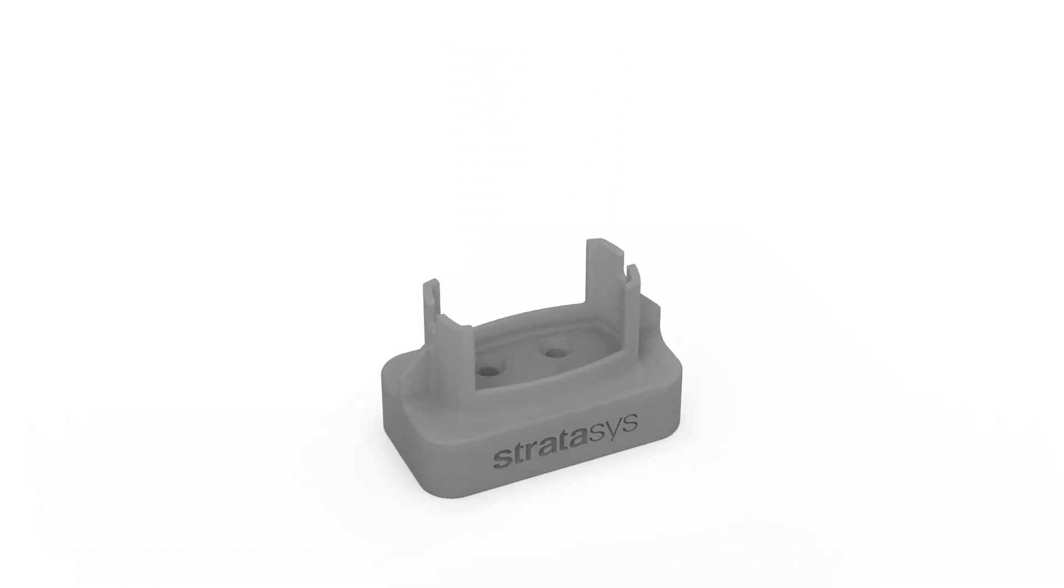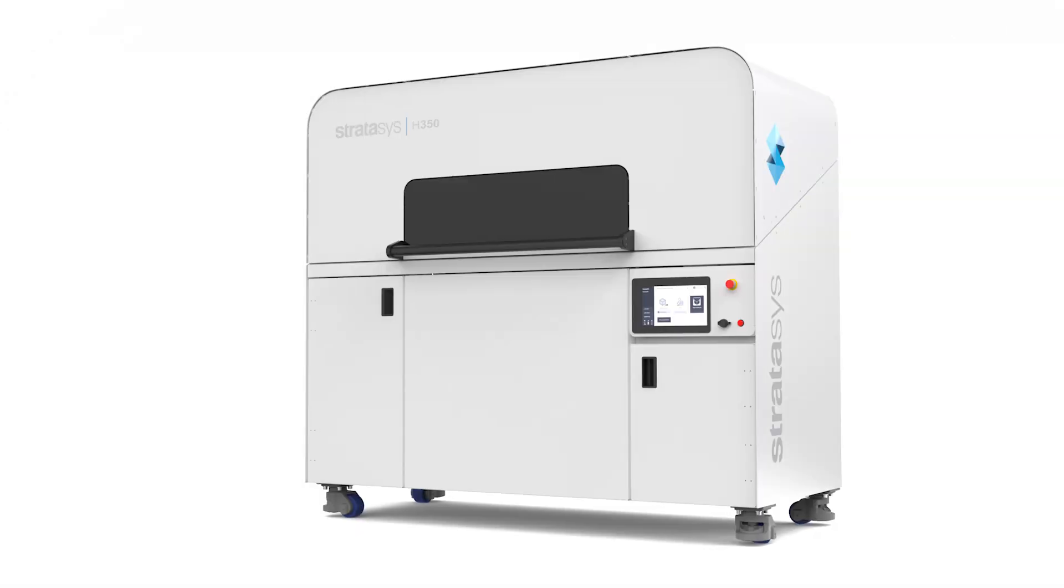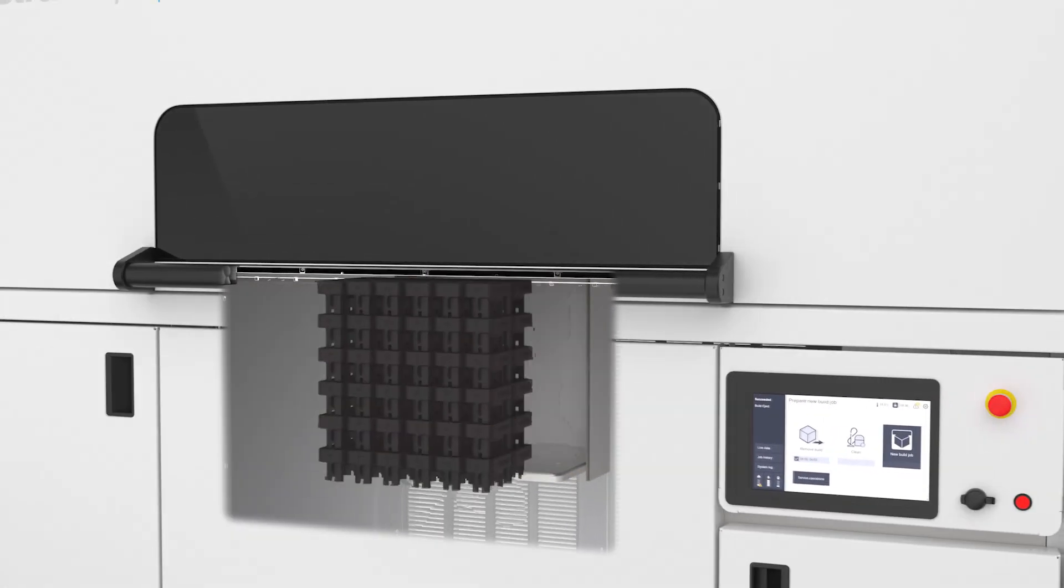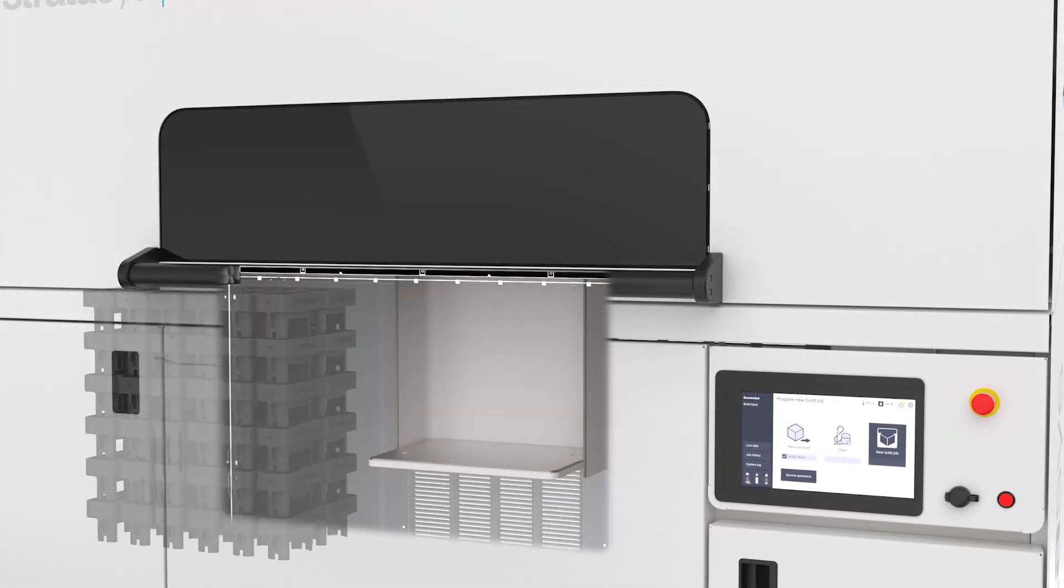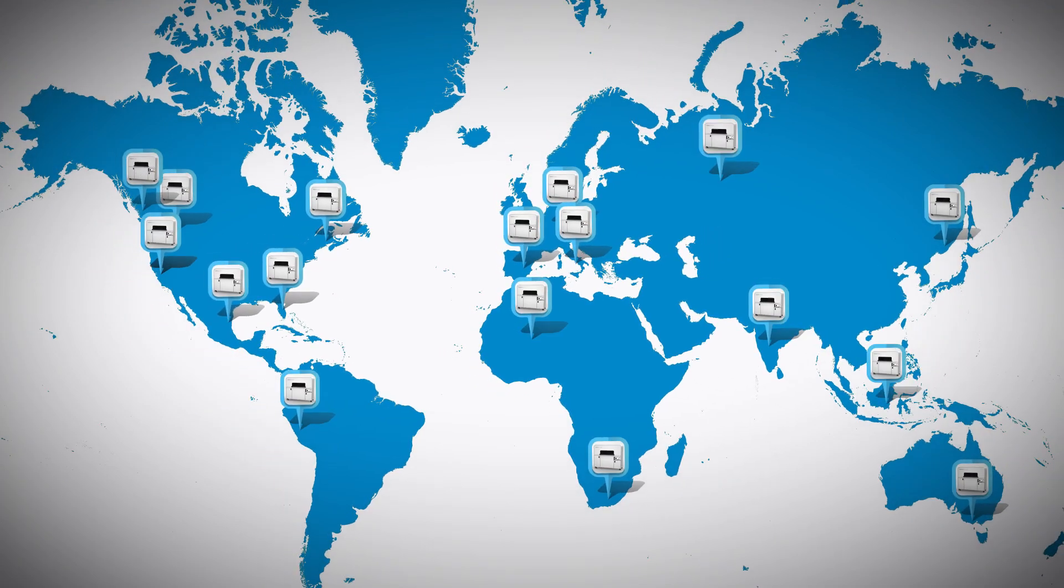This is what the H350 3D printer powered by SAF technology achieves for production-grade parts, not just across each print, but build after build and across different printers and locations, allowing customers to trust in the process.